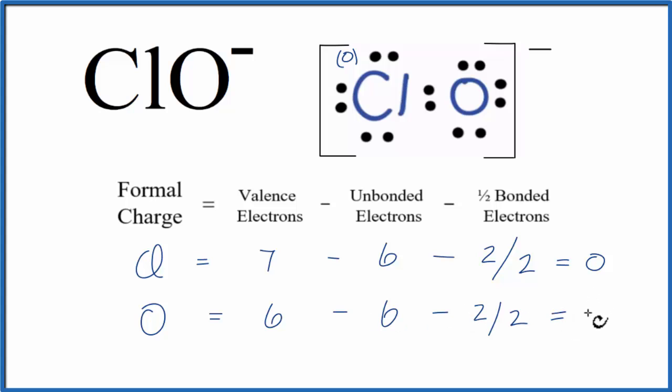6 minus 6 minus 1 gives us a minus 1. So the formal charge on this oxygen right here is minus 1.